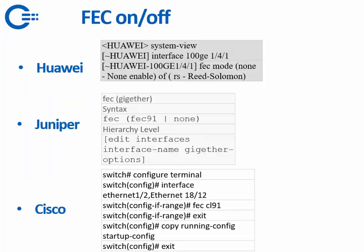Here are some CLI commands for Huawei, Juniper, and Cisco showing how you can turn FEC on and off. Basically all major brands will have these commands available. Thank you very much.